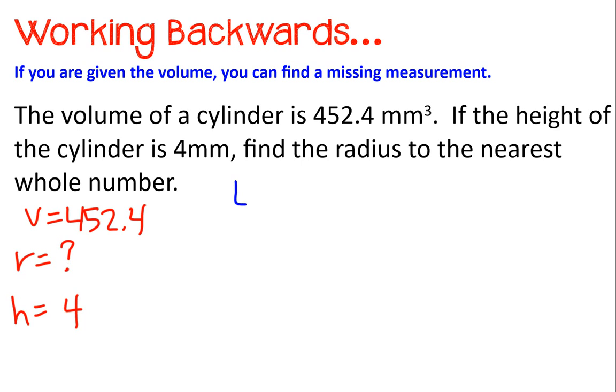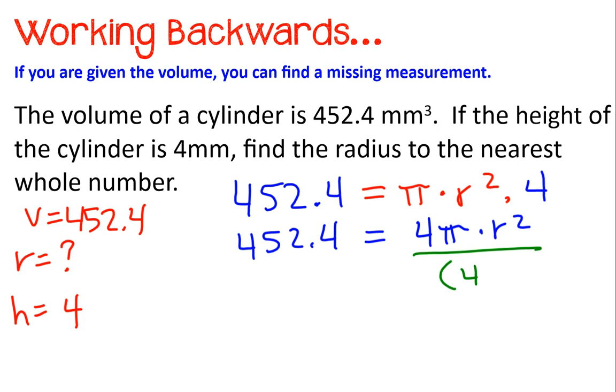So I'm going to fill this value in. 452.4 equals pi times radius squared. I don't know, but height I do know. So 452.4 is equal to 4 times pi times r squared. And I'm going to divide both sides by the group of 4 times pi. So I'm canceling these out. Because 4 divided by 4 is 1, and pi divided by pi is 1. Unfortunately, it doesn't give me the r value, but r squared will do for now. So get your calculators out.